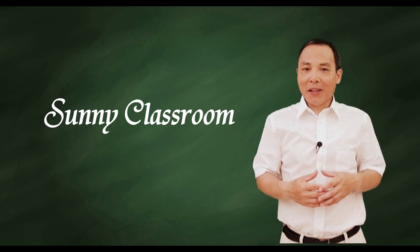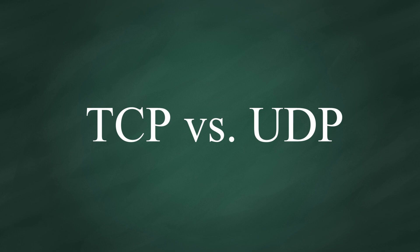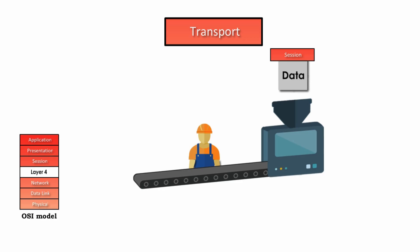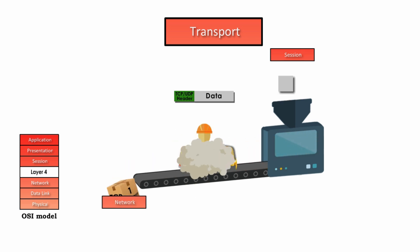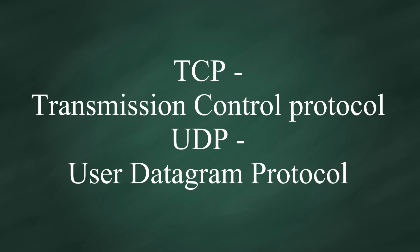Hello, and this is Sunny. Welcome back. Today, my topic is TCP and UDP. TCP and UDP are two protocols at the transport layer of the OSI model. TCP stands for Transmission Control Protocol, and UDP stands for User Datagram Protocol. Let's look at their differences.